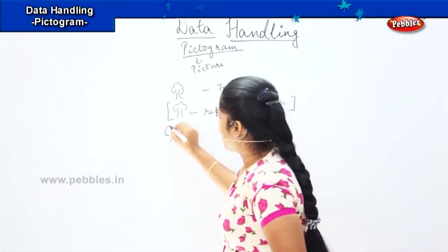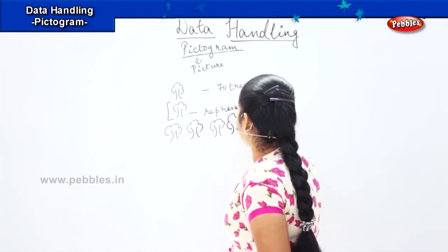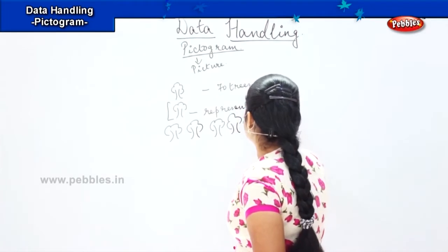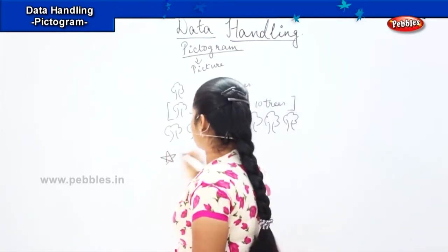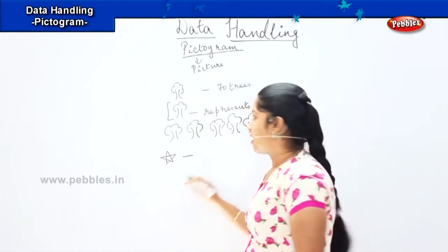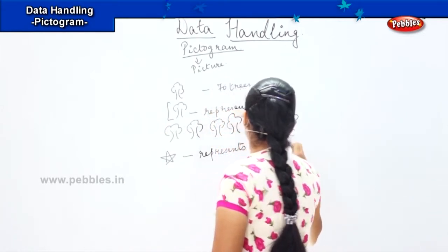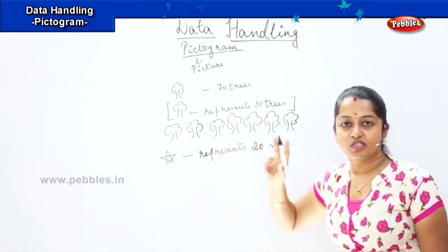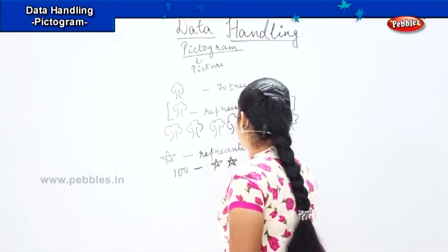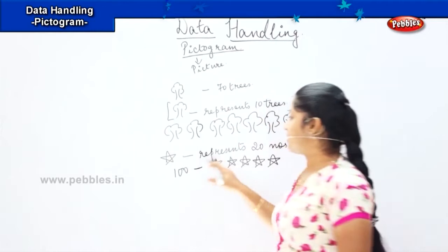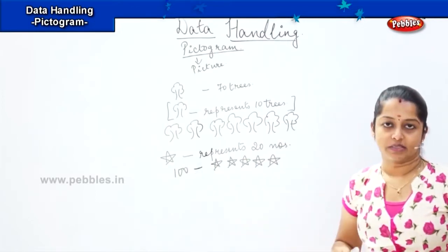So in case of 70, what will I draw? I will draw only 7 trees, because one tree denotes 10 numbers. So I draw 1, 2, 3, 4, 5, 6 and 7. Similarly, if I draw a star and say that one star represents 20 numbers, and if I have to represent 100, I will draw only 1, 2, 3, 4 and 5 stars, because one star represents 20 numbers, so 5 stars equals 100.